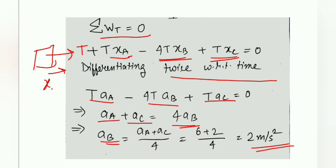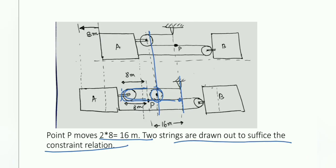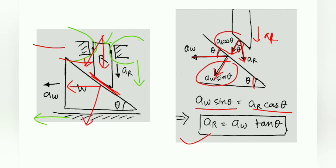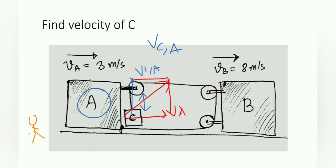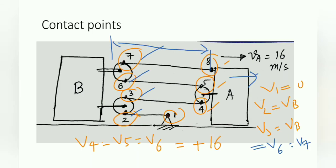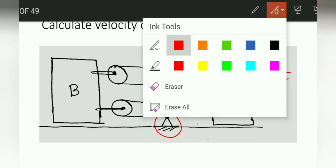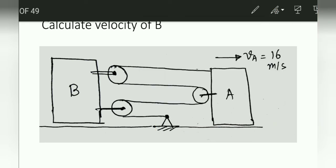Now it is your homework to solve the next question using the Tension Work Method — it will be very simple. Calculate the velocity of B; we had solved this in earlier lectures, but it will be very helpful to solve it using the Tension Work Method. Comment your answer below. Thank you for your patient hearing. If you like our content, please like this video, share it with your friends, and subscribe to our channel for more such content.